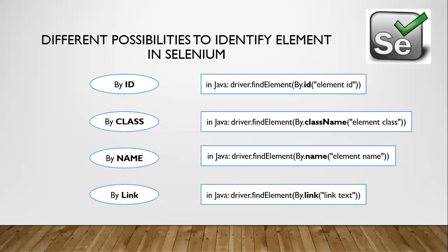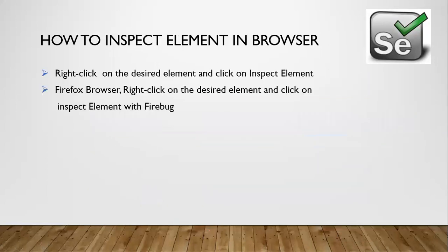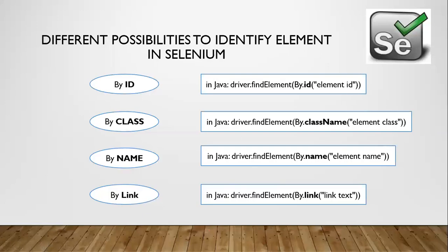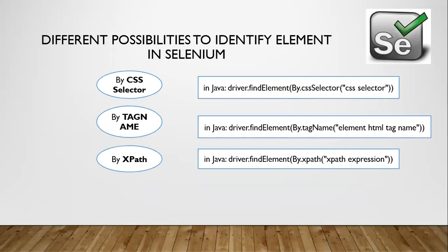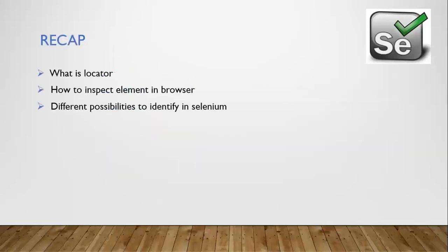We will see what is the best way to locate individual elements in Selenium in our subsequent tutorials. In this tutorial, the agenda was to show you all the possibilities to locate a web element: by ID, class name, name, link text, partial link text, CSS selector, tag name, and XPath.